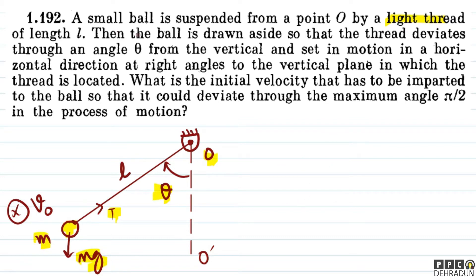I select point O. About this point O, we need to calculate the torque. There is a mass M on which torque is acting, and you need to take the component of that torque along the axis OO'. That is called the torque about axis OO'. There are two forces acting on this particle: tension and mg.